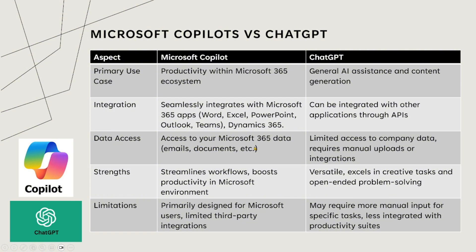Data access: Co-Pilot can access your Microsoft 365 emails, documents, and all those things. You need to do some security configuration and have the appropriate license. Once you have the license, you can quickly use Co-Pilot. ChatGPT has limited access to company data and requires manual uploads and integrations — if you want to summarize a document, you need to upload it to ChatGPT, which is not recommended given that company data contains proprietary information.